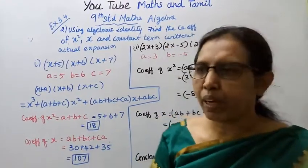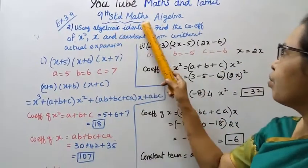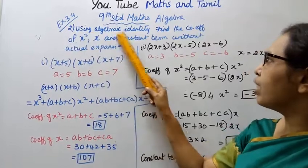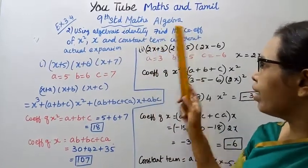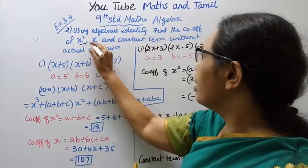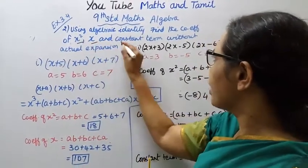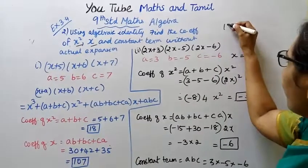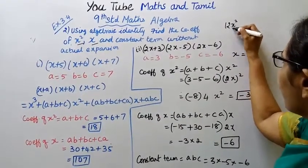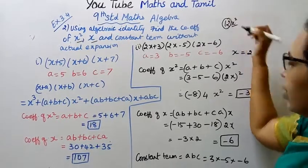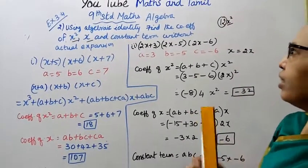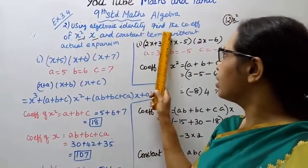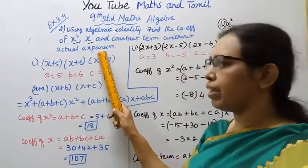Hello students, welcome to Max and Tumult channel. This is algebra exercise 3.4. Using algebraic identity, find the coefficient of x squared, coefficient of x, and constant term without actual expansion.